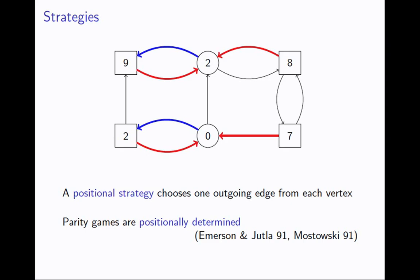It turns out it's sufficient to consider positional strategies. Player even at each of his vertices has picked one of the outgoing edges, and if a token ever arrives at one of these vertices, he'll always use the outgoing edge specified by this positional strategy. It's been shown that if you can win a parity game, you can win it with a positional strategy. Given a parity game, we're interested in finding winning strategies for both players and deciding who wins from a given vertex.